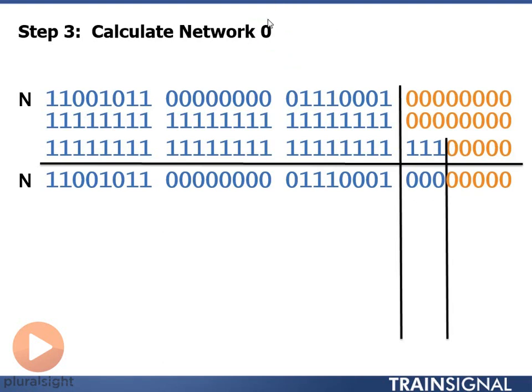So what I have to do here is convert zero to binary, which is zero, and then I fill it up in three bits. I then put five bits in my host portion. Since I want a network address, I put all zeros in my host portion. What this does for me now is it tells me what network zero is.